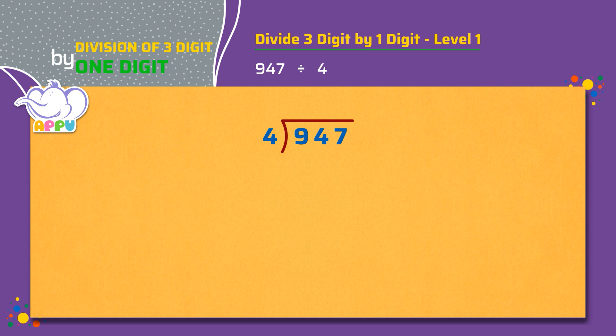Step 1. We figure out how many 4's does it take to make 9 or almost 9, which is 2. Step 2. We multiply 4 and 2, we get 8. Step 3. We subtract 9 minus 8 equals 1.